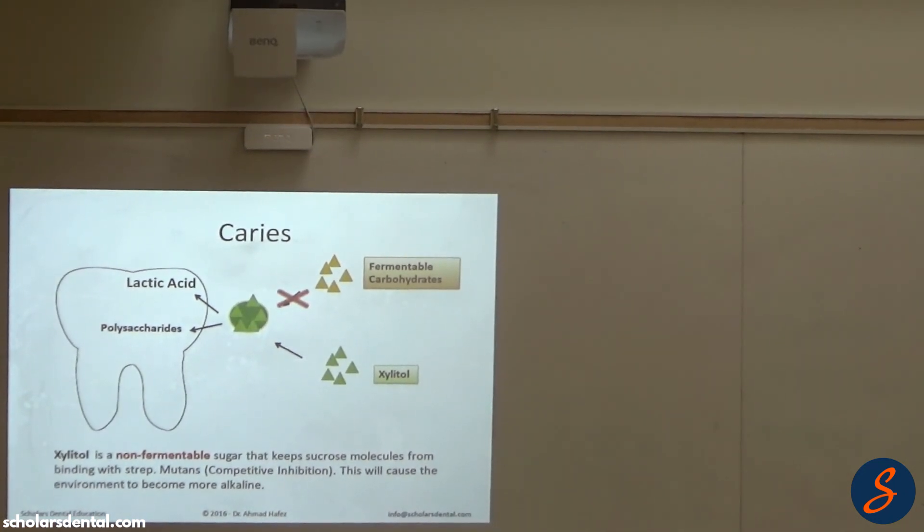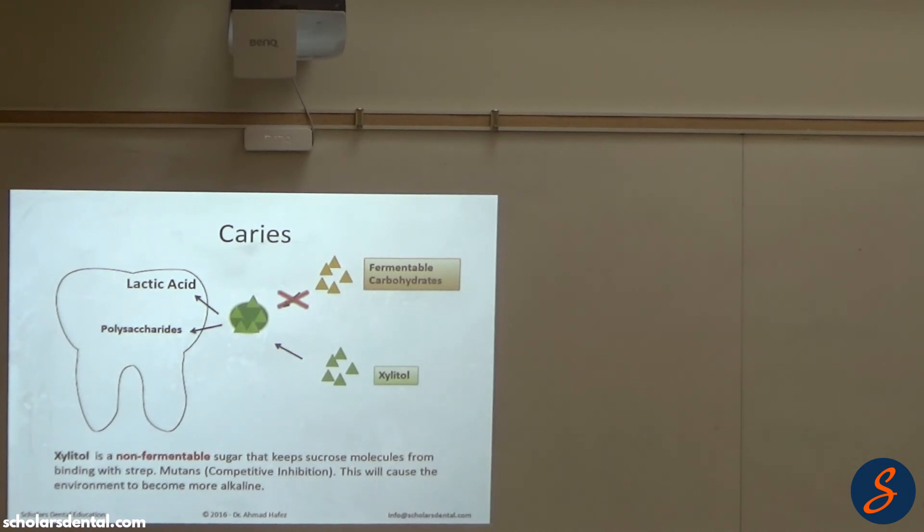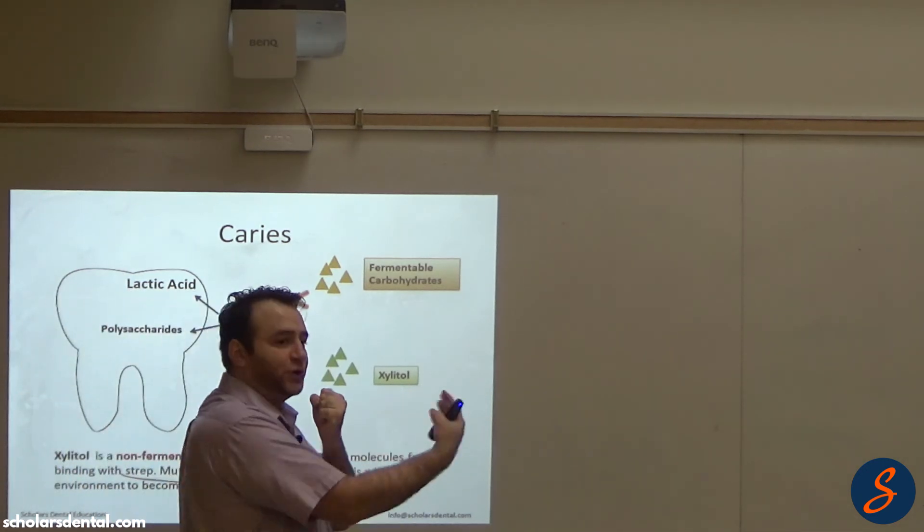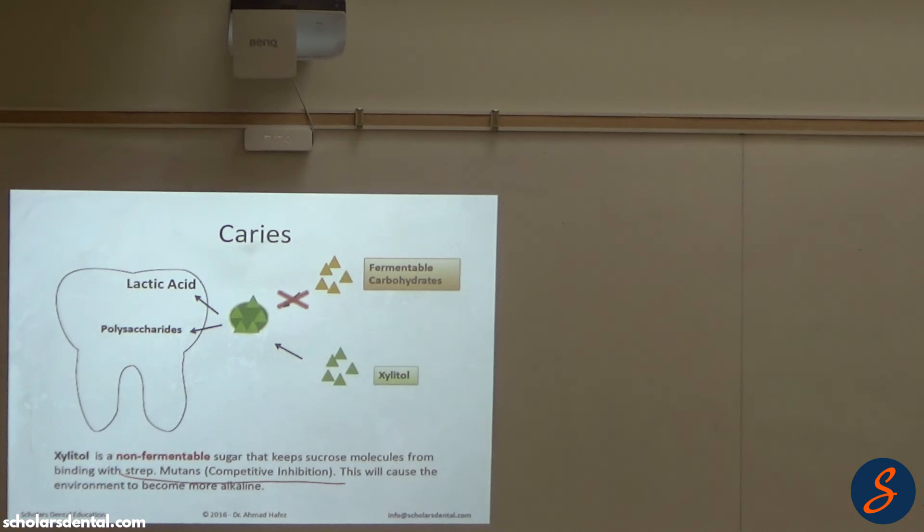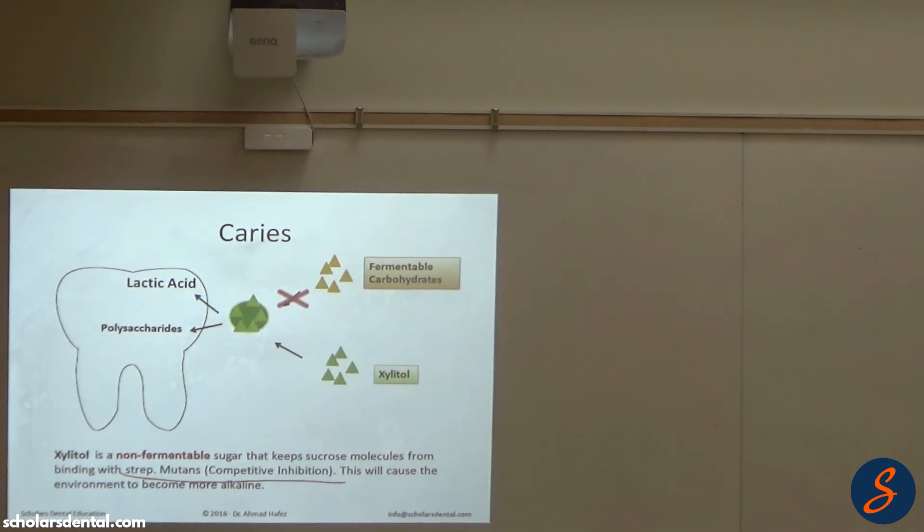So xylitol is a non-fermentable sugar that keeps sucrose molecules from binding with strep mutans. There's some competitive inhibition. Once the bacteria gets the xylitol, it can't ferment it, but it also can't accept more sugar because all its receptors are taken up by the xylitol. So xylitol actually is anti-cariogenic, which is good.